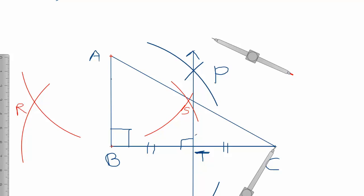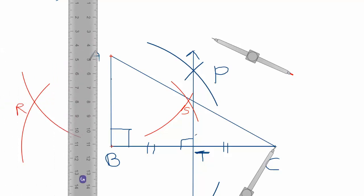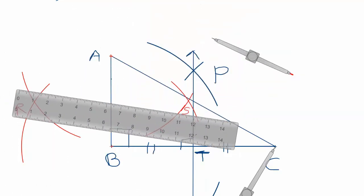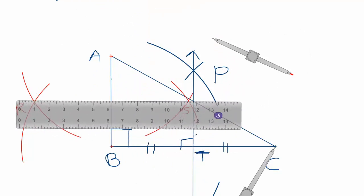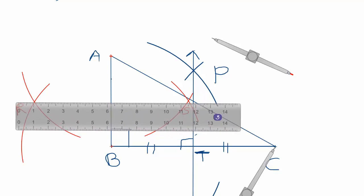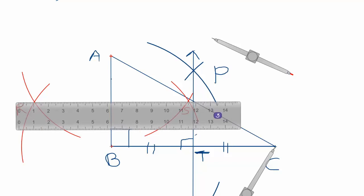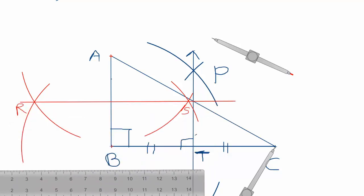With the help of ruler, draw the line passing through the point S and R. Draw the arrow at both the end. Draw perpendicular bisector of side AB in triangle ABC.